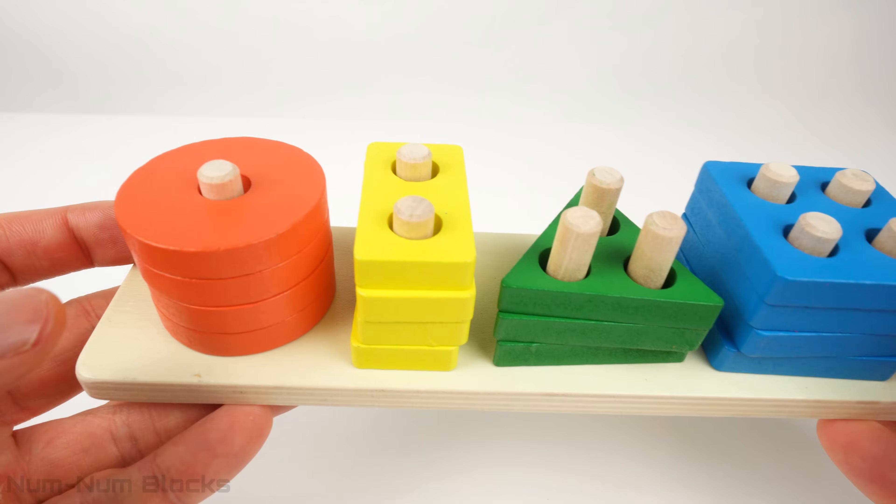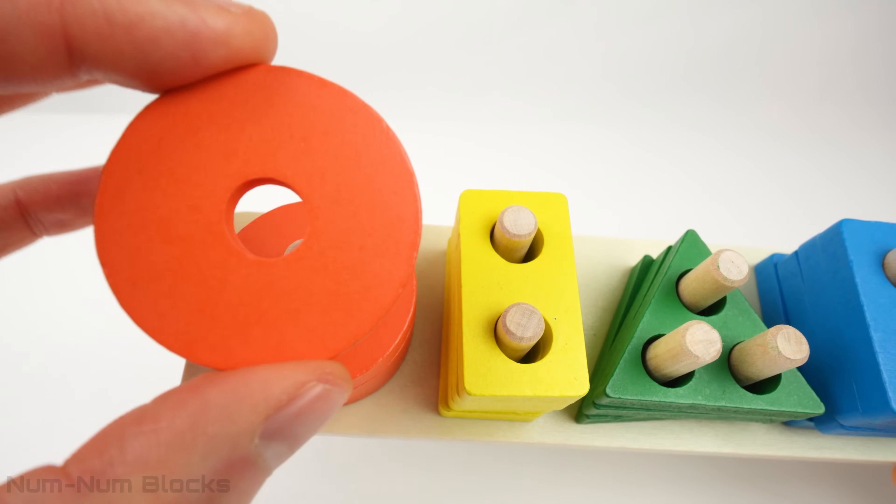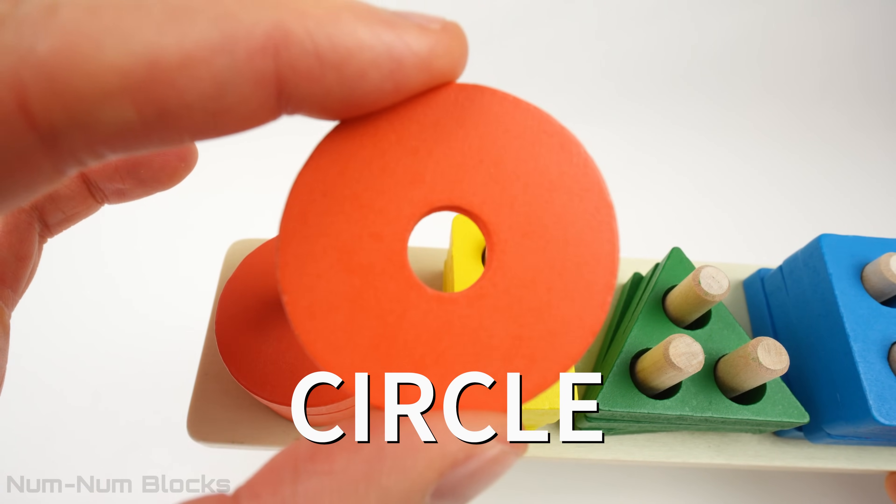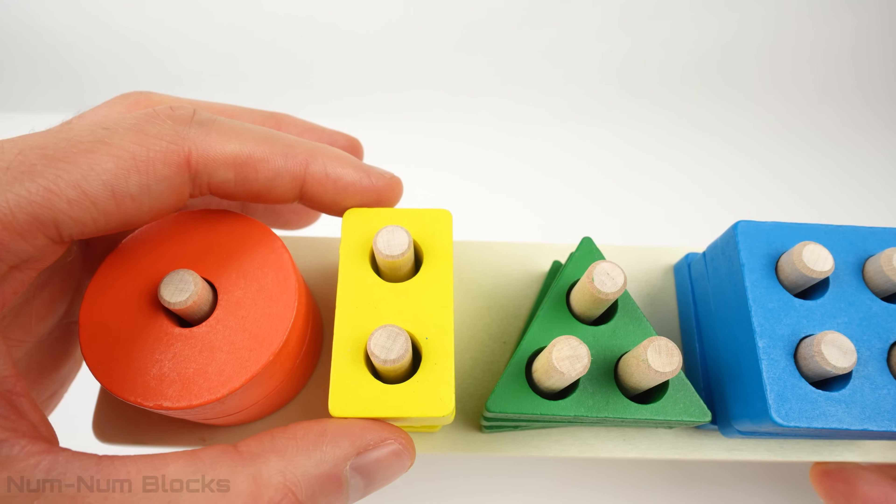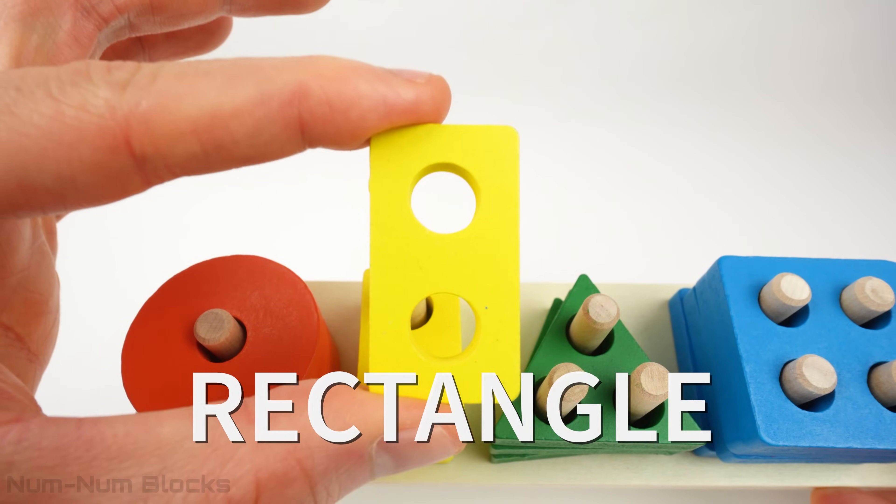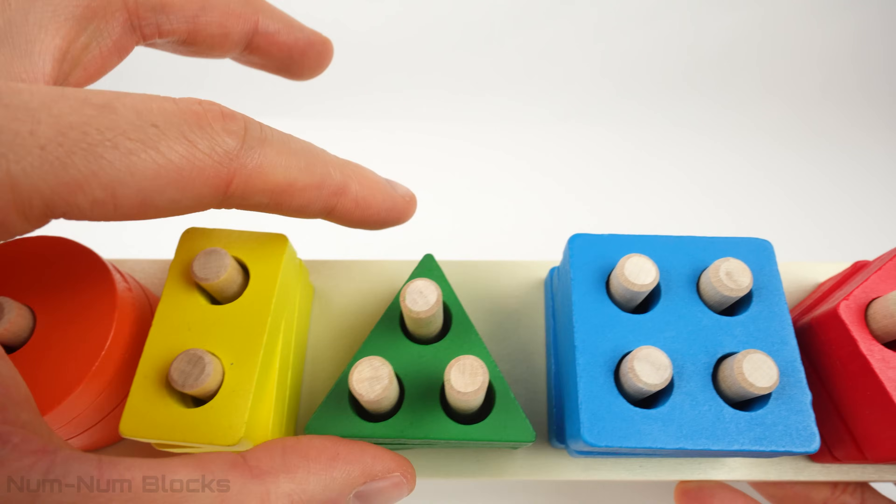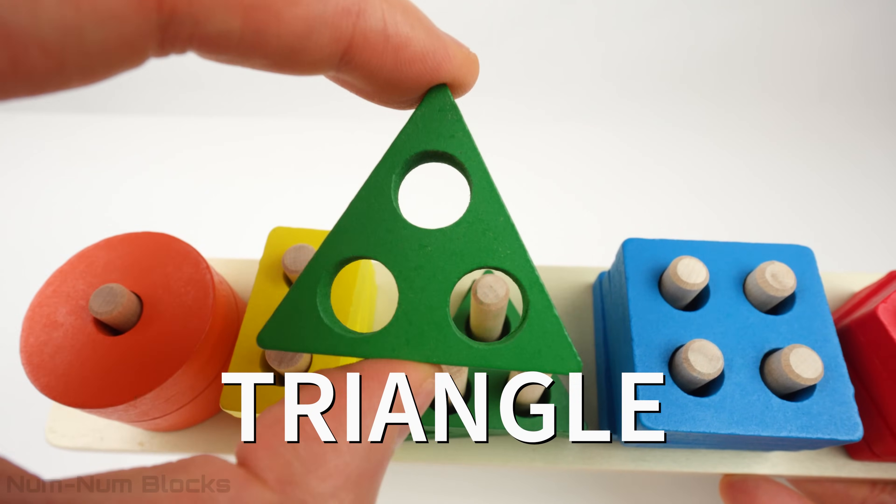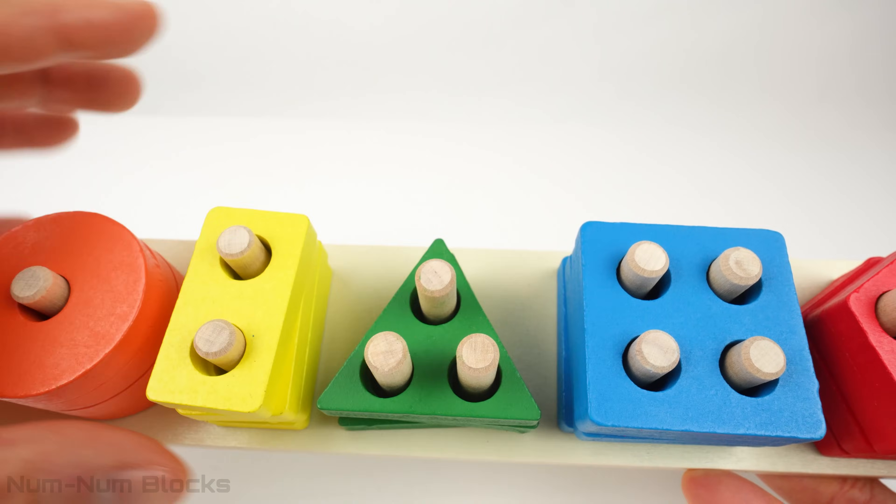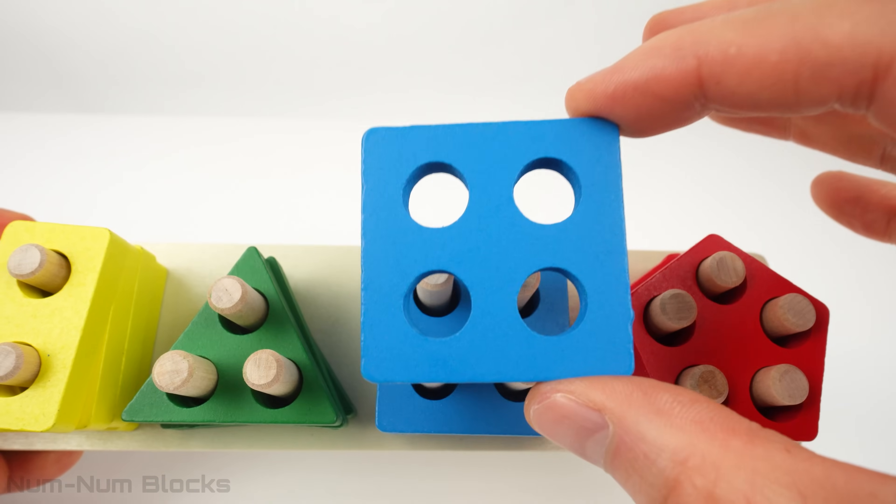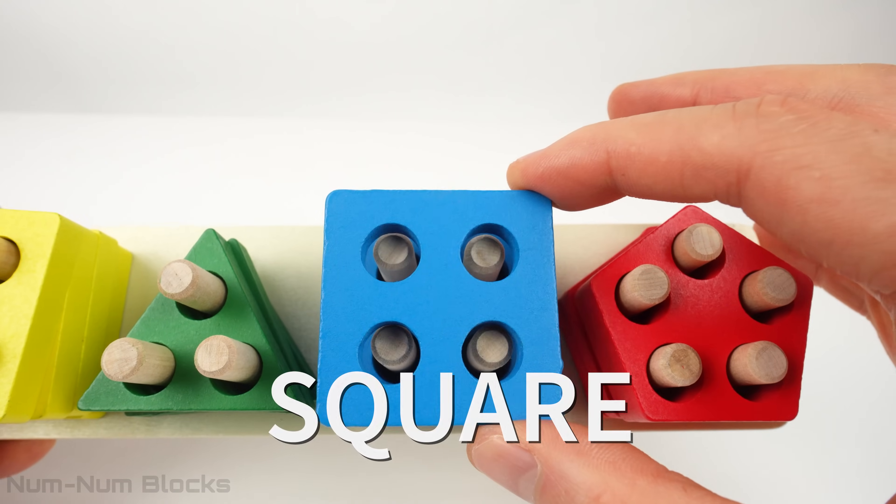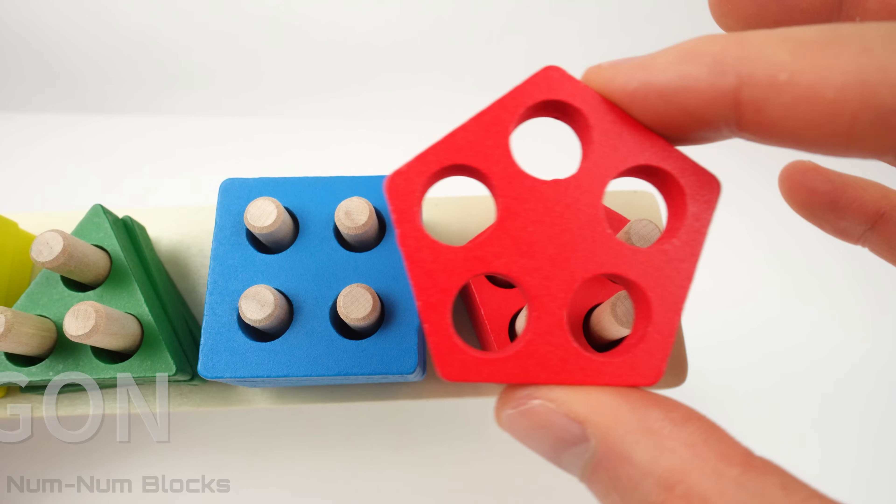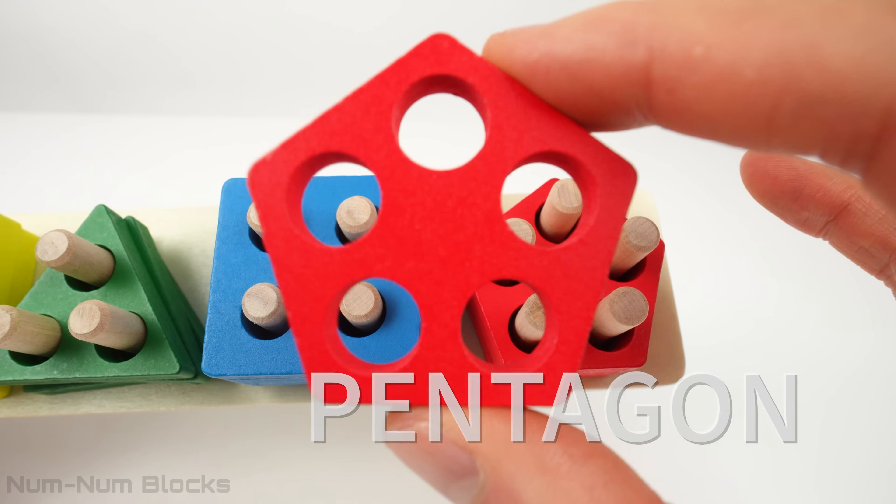Let's take a closer look at the shapes. This orange shape with one hole is a circle. This yellow shape with two holes is a rectangle. This shape is a triangle. The blue shape with four holes is a square. This red shape with five holes is a pentagon.